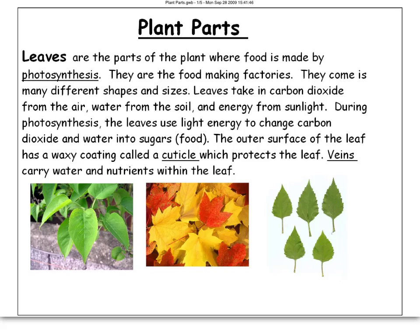Let's start with leaves. The leaves are the food-making parts of the plants. This is where photosynthesis takes place, so the food-making factories are sun-catchers. They come in all different shapes and sizes, and that allows them to collect different amounts of sunlight, depending on the plant. They may need bigger leaves so they can grow larger, so they need more sunlight.